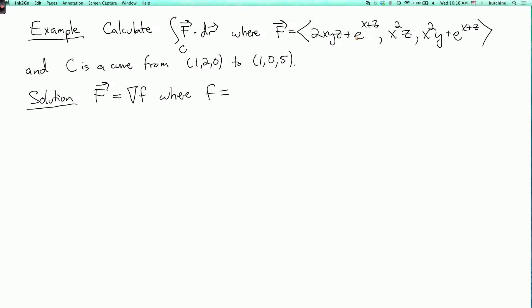So if we look at the first component of the vector field, that's supposed to be the partial derivative with respect to x of the function lowercase f. So what's a function whose derivative with respect to x is this? Well, we could try x squared yz plus e to the x plus z. And let's just check if it works. If we take the derivative with respect to y, then I get x squared z, and that's what I'm supposed to get, so that's good. Then if I take the derivative with respect to z, then I get x squared y plus e to the x plus z, and that also works. So we took a lucky guess and checked it, and it worked.